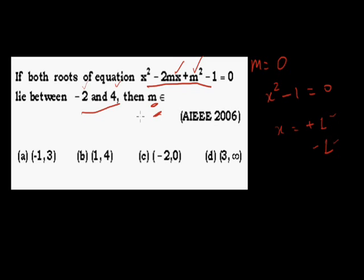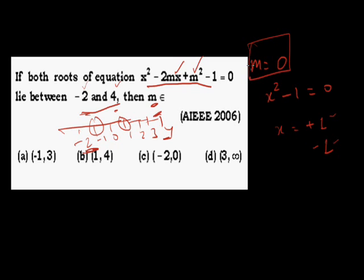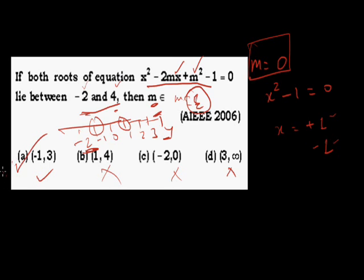Both roots -1 and +1 lie between -2 and 4: on the number line, -2, -1, 0, 1, 2, 3, 4 — yes, both roots lie in that interval. So m = 0 is one valid solution. Now it's asking the range of m. Let's check the options: options without 0 can be eliminated. The only option containing 0 is the one where m varies from -1 to 3. Therefore the answer is option A.